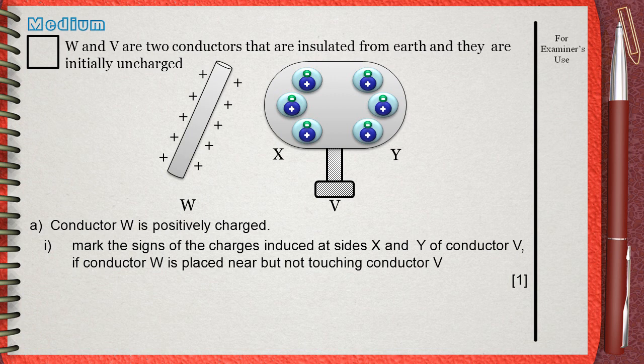When we approach the positively charged rod to Conductor V without touching it, some changes will happen to the atoms. On side Y, the electrons will leave their atoms and move to the side that is closer to the rod. This is by attraction.